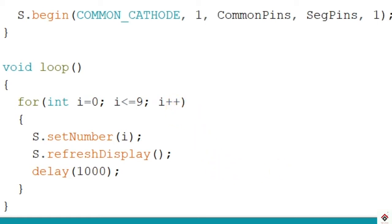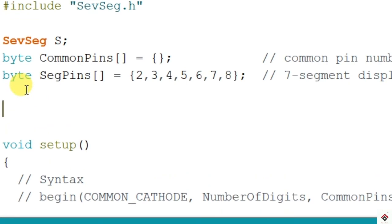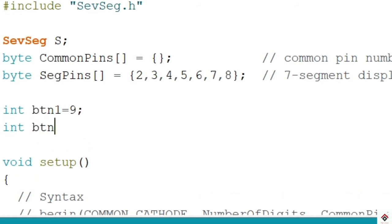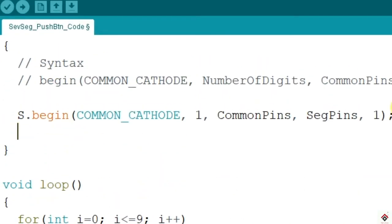As I said before, since we will be adding two push buttons, we will declare that in the declaration section using int data type. Button 1 is connected to digital pin 9, button 2 to 10. These two are input devices, so we will make pin mode as input.